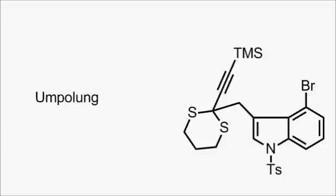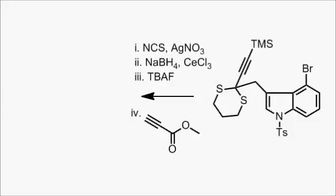Anyway, once the dithiane is attached, a few more modifications happen. N-chlorosuccinimide and silver nitrate were used to deprotect the dithiane. Sodium borohydride and cerium trichloride reduced the revealed ketone to an alcohol.